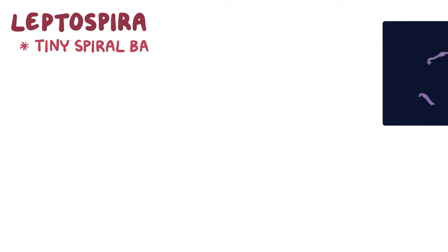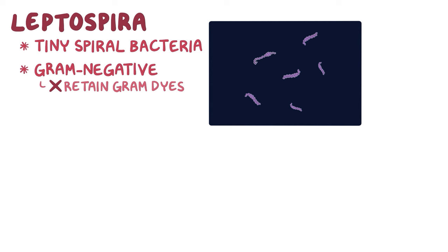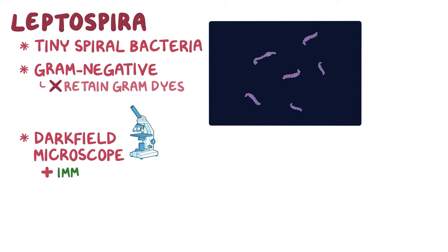Leptospira is a tiny spiral bacteria that stains poorly with gram staining because it doesn't retain the gram dyes well, so it's classically considered gram negative. It's also too tiny to be seen with a light microscope, so you need a dark field microscope with the use of immunofluorescence.